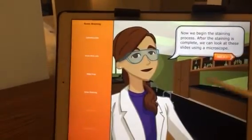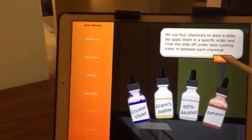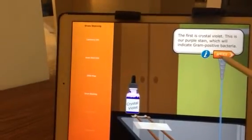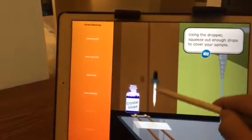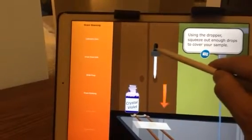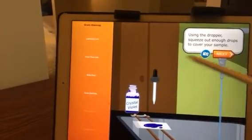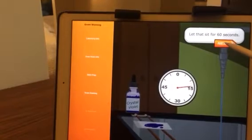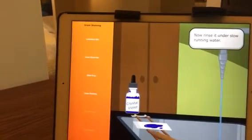Now we begin the staining process. We use four chemicals to stain. The first is crystal violet. Using the dropper, squeeze out enough drops to cover your sample. Let that sit for 60 seconds. Now rinse it under slow running water.